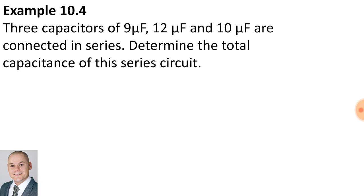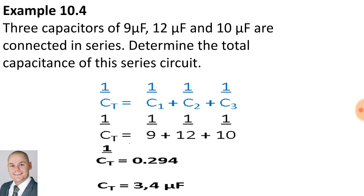Three capacitors of 9 microfarad, 12 microfarad and 10 microfarad are connected in series. Determine the total capacitance of the series circuit. So the formula will be very similar to that of resistors in parallel: 1 over CT is equal to 1 over C1 plus 1 over C2 plus 1 over C3. The capacitor number one is 9, so it's going to be 1 over 9 plus 1 over 12 plus 1 over 10, and that would give us 0.294. To calculate the total capacitance, if we invert that value, we'll get a total of 3.4 microfarad.